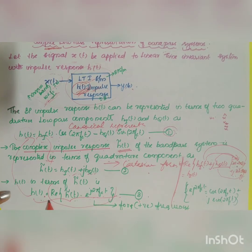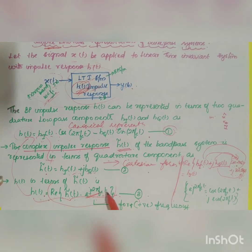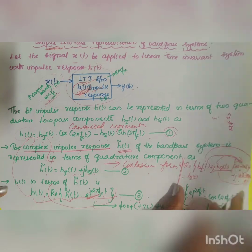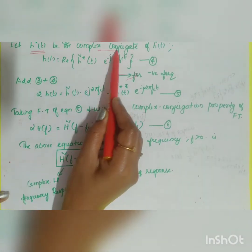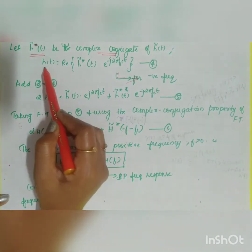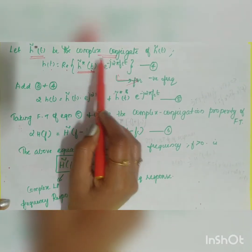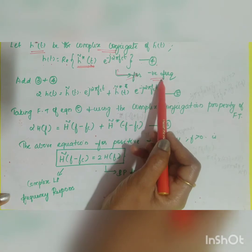That confirms h(t) can be expressed in terms of the complex impulse response as: Re[h̃(t)·e^(j2πfct)], which is Equation 3 for positive frequency. The same can be written for negative frequency: the only difference is e^(−j2πfct) instead of e^(j2πfct). For negative frequency, we take the complex conjugate, so h(t) = Re[h̃*(t)·e^(−j2πfct)], which is Equation 4.